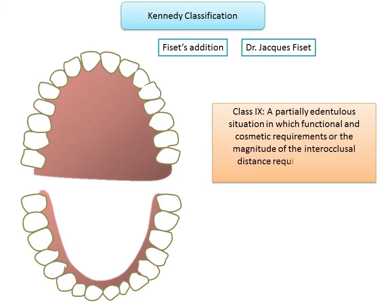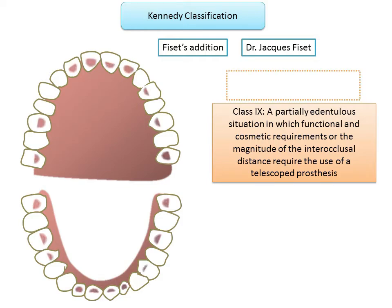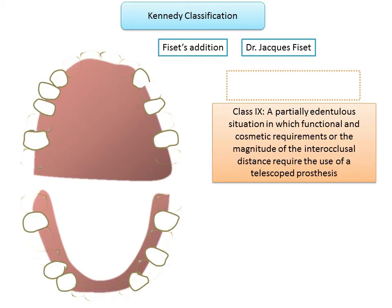Class 9 is a partially edentulous situation in which functional and cosmetic requirements, or the magnitude of the interocclusal distance, require the use of a telescoped prosthesis — either partial or complete — and the remaining teeth are capable of total or partial support for the prosthesis. There are many edentulous spaces scattered throughout the arch.